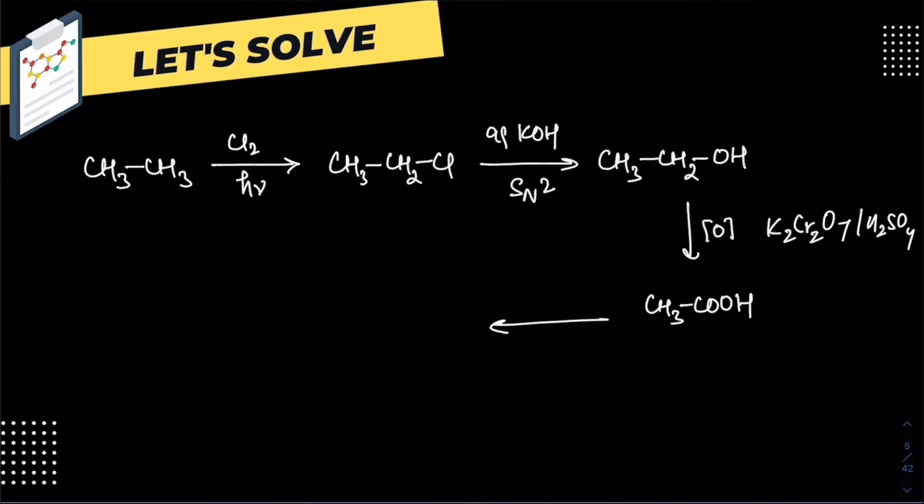This will give you CH3COOH, acetic acid. Now you can use the decarboxylation method - soda-lime decarboxylation. In soda-lime decarboxylation, this CO2 will be removed and you will get CH4.